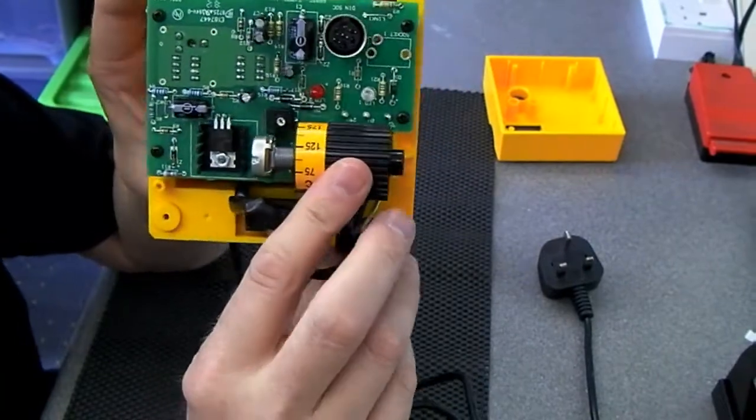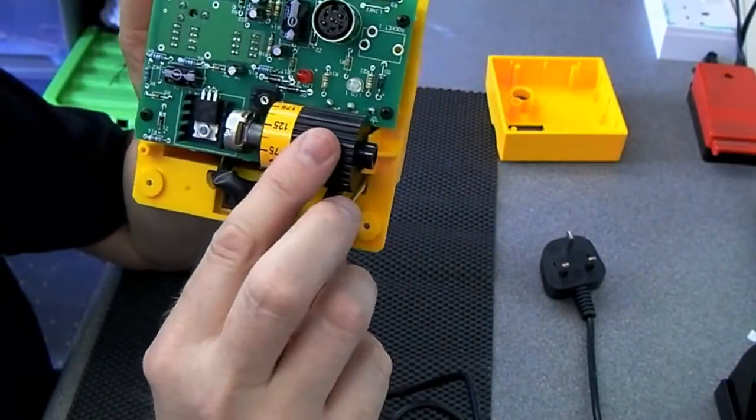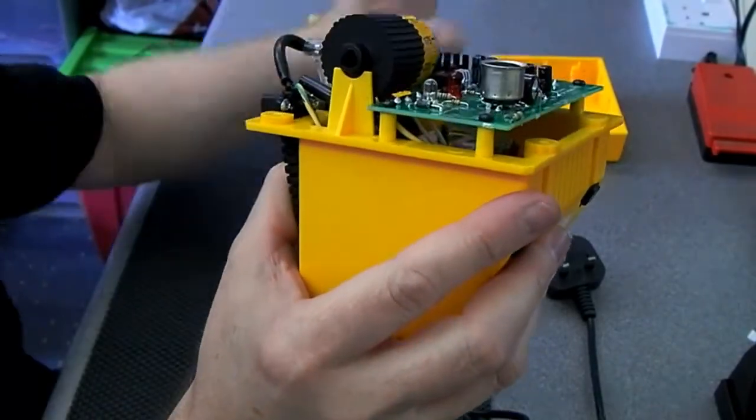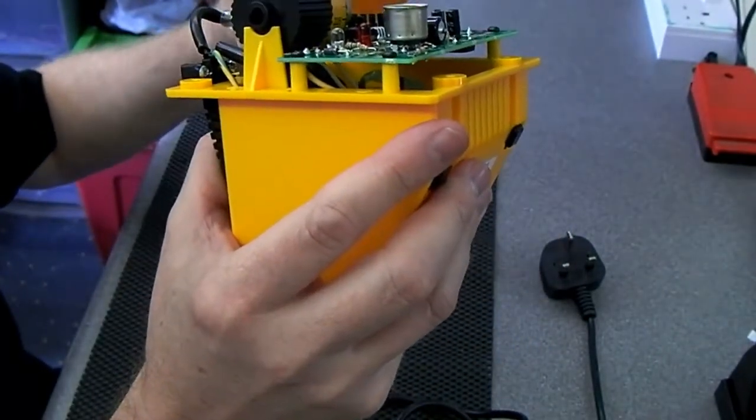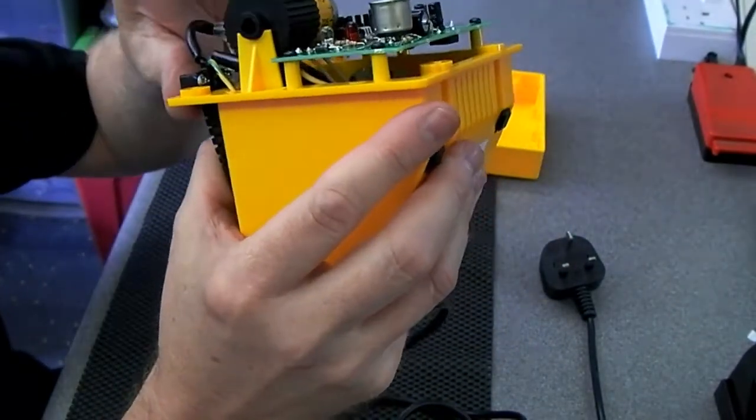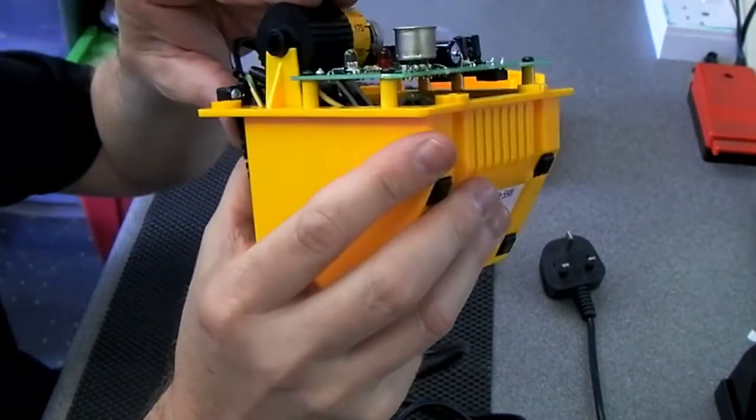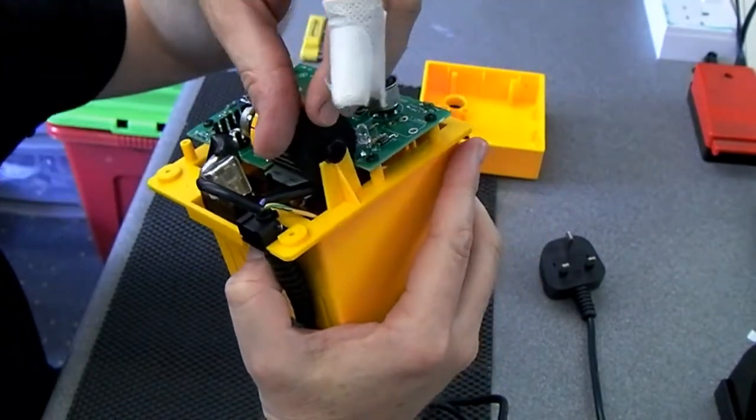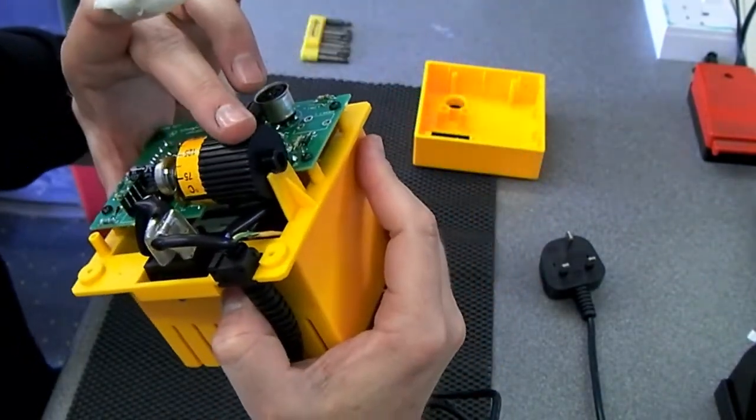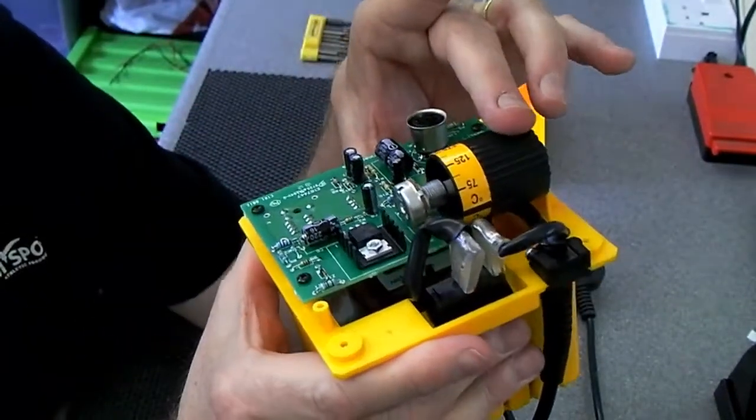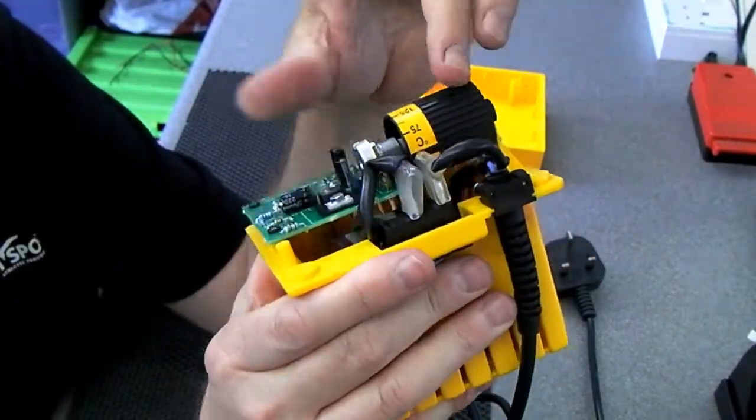That adjustment there is just on a standard pot. It just rests in there and the front obviously just holds it in place. There was no movement in that when it was in the case. But that might be a little weak spot for dry joints on that potentiometer there.